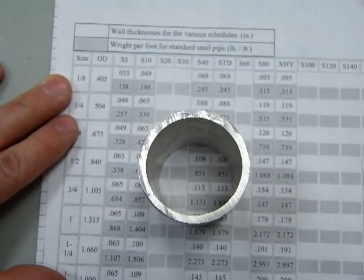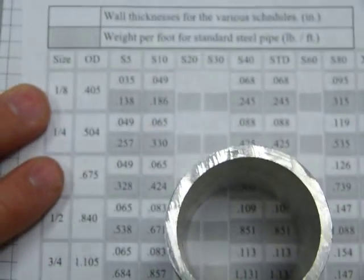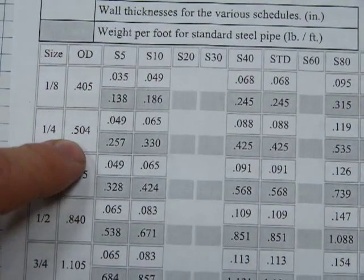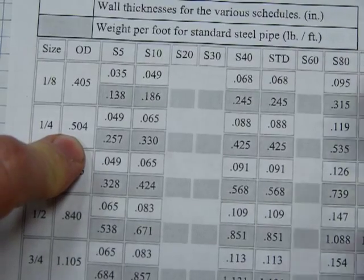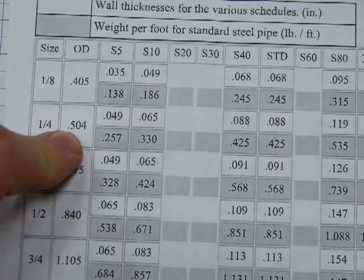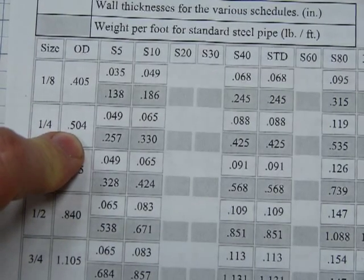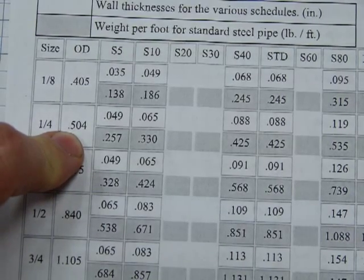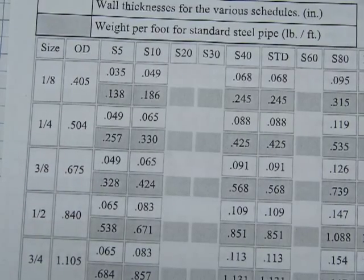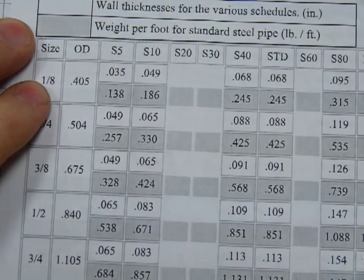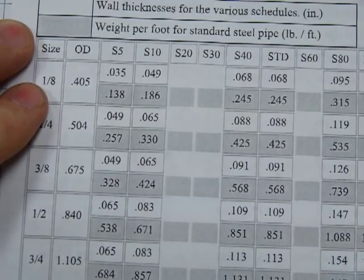If you look at the numbers here, there's a problem: the OD amounts — the outside diameter amounts — are all in decimal inches. In fact, all of the numbers in the white squares are decimal inches. If you need to refresh your memory on the concept of decimal inches, take a look at one of my titles — it's titled 'Converting Fractions to Decimal Inches' or something like that — and it's in the metric and imperial playlist.